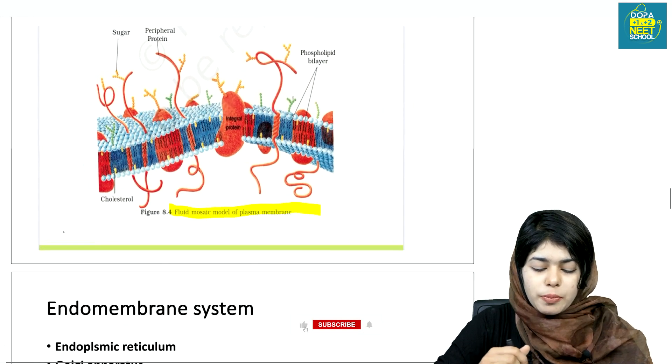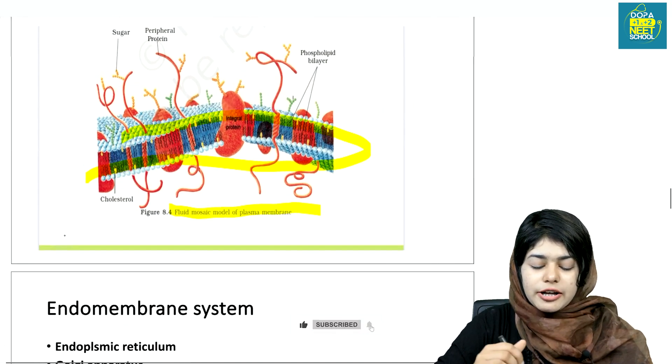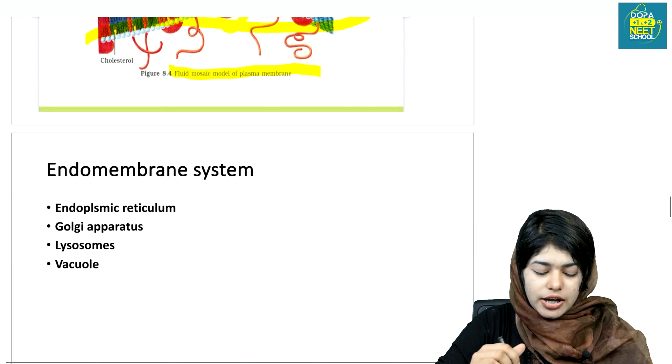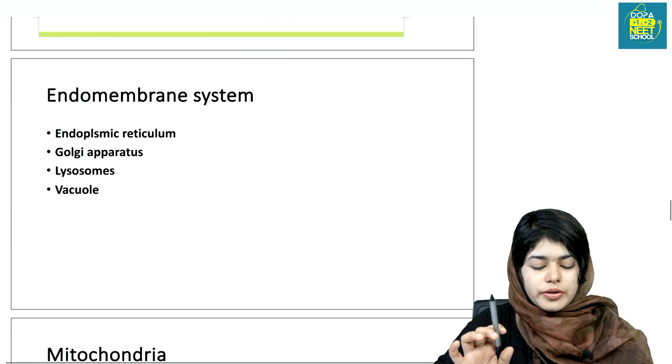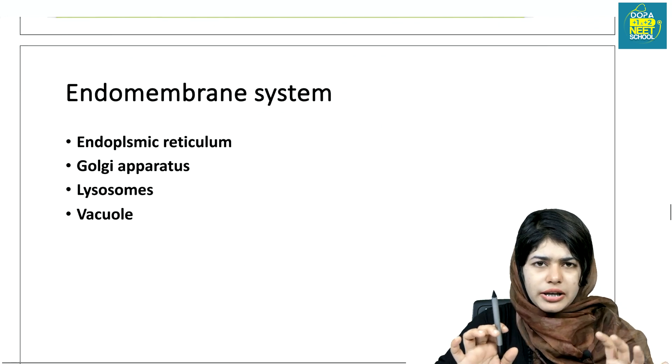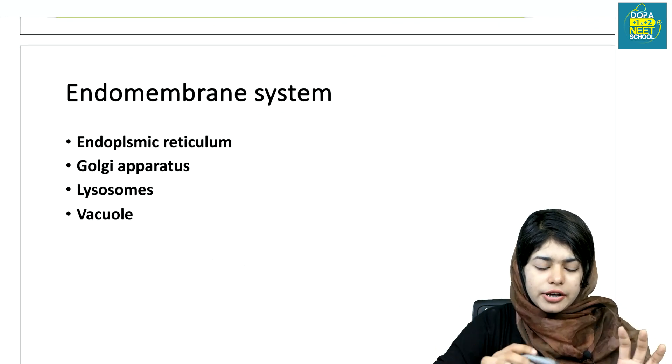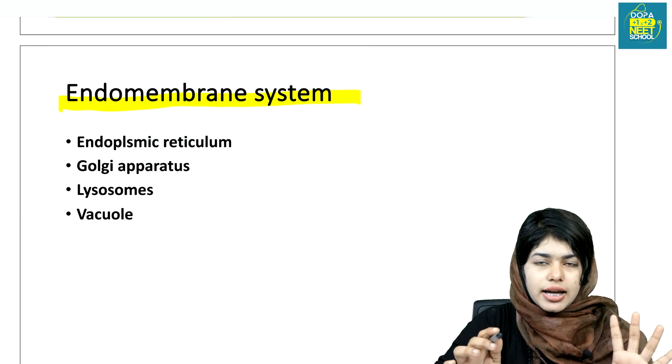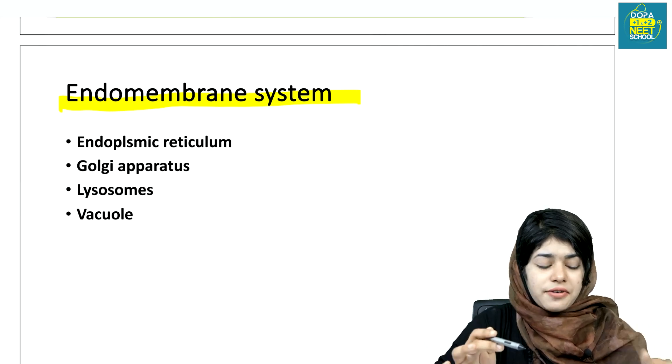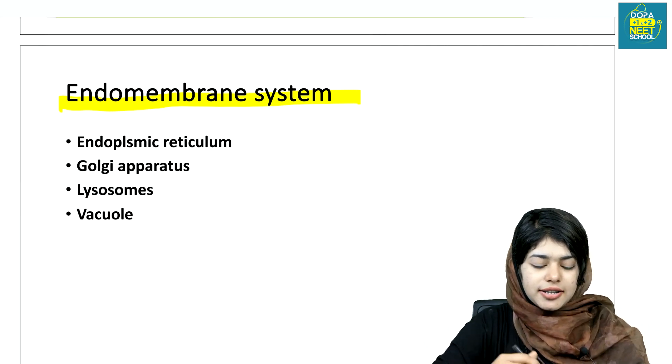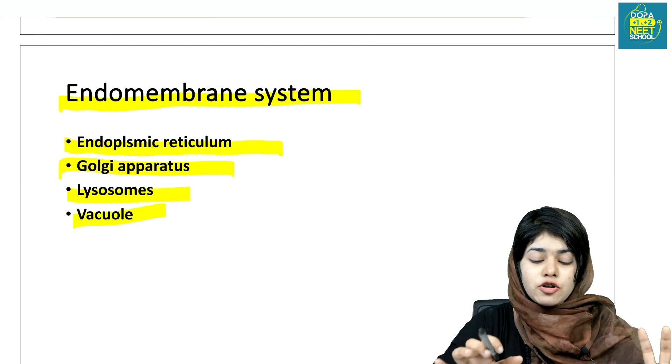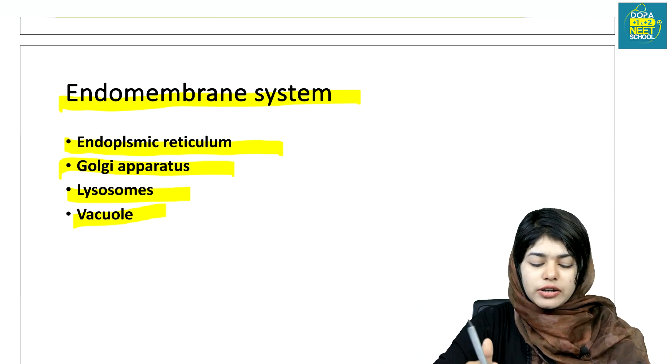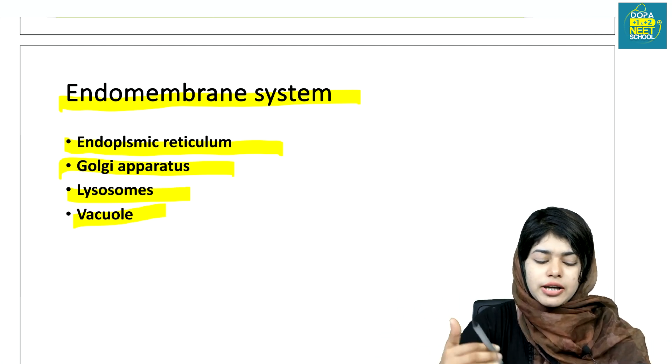The fluid mosaic model of plasma membrane is very important. Double layer of lipid bilayer with integral proteins. The endomembrane system includes endoplasmic reticulum, Golgi apparatus, lysosomes, and vacuoles. It's important to learn their functions.